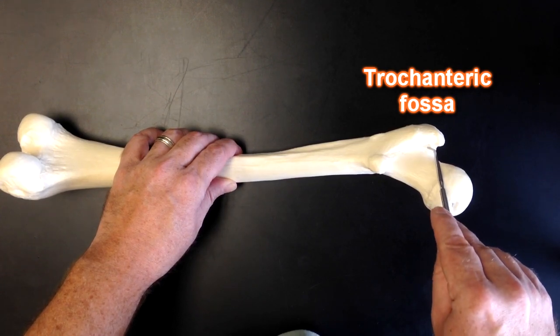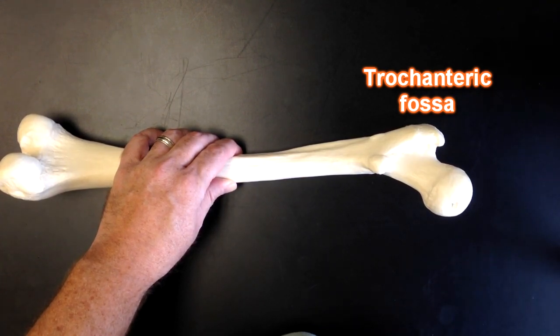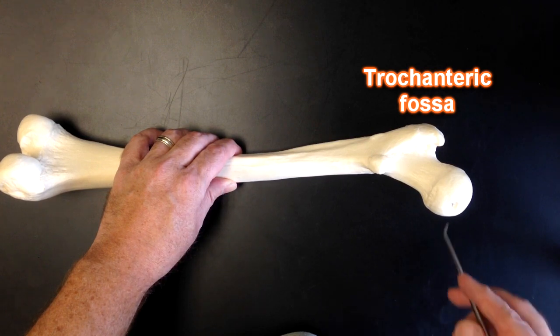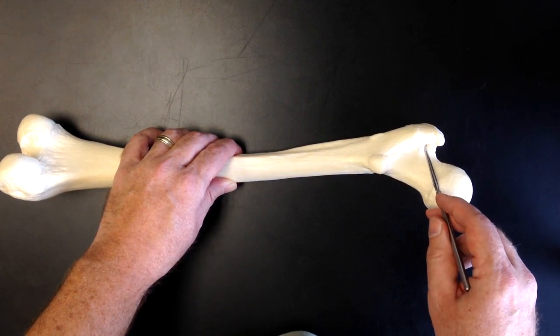One of the deep external rotators of the hip, specifically the obturator externus, is going to attach there.